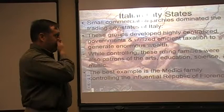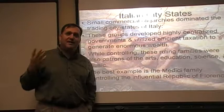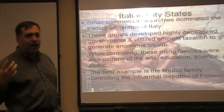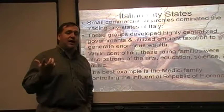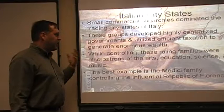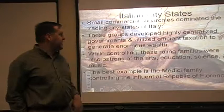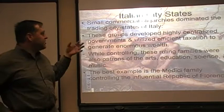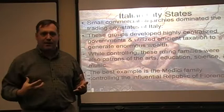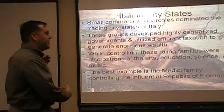So why the Italian city-states — why Venice, Milan, these places? These small commercial oligarchies dominated the Italian trading states. These small republics broke away from the Holy Roman Empire and set themselves up around autonomy based on whoever had the most money controlling the trading cartels. They developed highly centralized governments and very efficient methods of taxation, generating enormous wealth because all Mediterranean trade was passing through them.